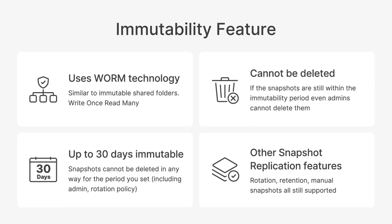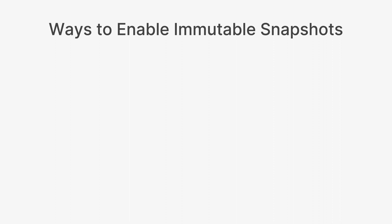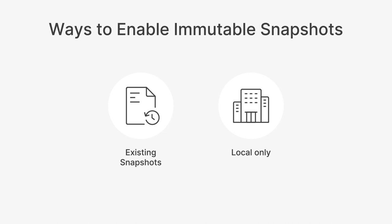There are several ways you can enable immutable snapshots once you're on the latest update. You can enable this for existing snapshots taken before you update — go into your snapshot list and enable the immutable feature to lock those snapshots for a specific period of time, up to 30 days. You can also enable this for local snapshots if you're not replicating anywhere else, and of course if you are replicating your snapshots elsewhere, you can enable the immutable feature for those as well.